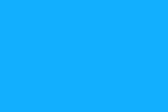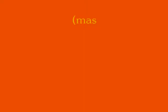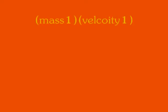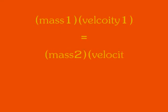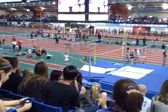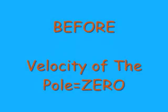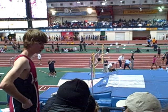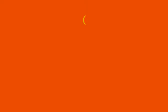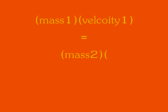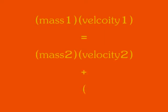Momentum, our next topic, is great because we get to look at the failures of track. The normal equation for momentum is mass times velocity of a system before a collision is equal to mass times velocity of a system after the collision. Before the girl on the pole hit, the velocity of the pole is zero. But then the girl and the pole collide, and some of the girl's energy is transferred to the pole. So we need a new equation: mass times velocity of the girl before the collision is equal to the new mass times velocity of the girl plus the mass times velocity of the pole.